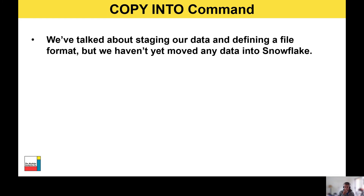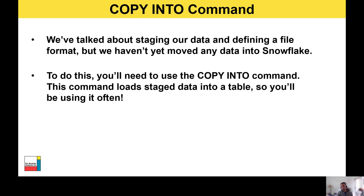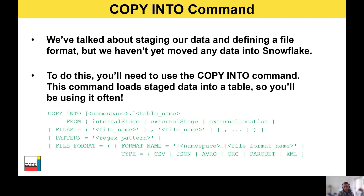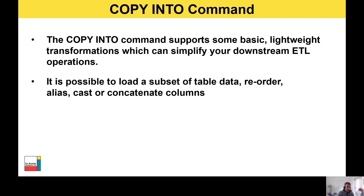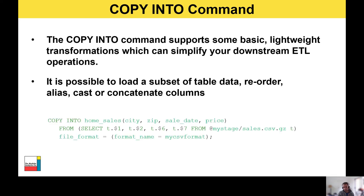Next, the copy into command. We've talked about staging our data and defining a file format but we haven't yet moved any data into Snowflake. To do this you'll need to use the copy into command — it loads staged data into a table, so you'll be using it quite frequently. There's an example SQL snippet you need to run to copy files from an internal or external stage into a table. The copy into command also supports some basic lightweight transformations which can simplify your downstream ETL operations — it's possible to load a subset of table data, reorder it, alias columns, and cast or concatenate columns. Here's an example of selecting just a subset of columns using the column position.